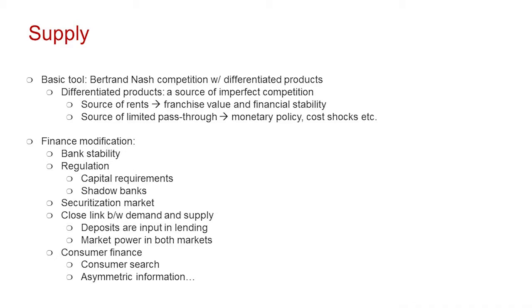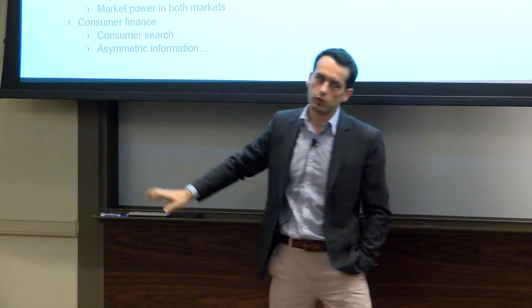A second dimension is consumer finance. Things I'm not going to cover today but want to highlight include consumer search, which is important, and asymmetric information, which plays an important role as a friction on the production side. I tried different ways to do this lecture, and at the end of the day I decided to walk you through two papers, simplify, and emphasize the key things.